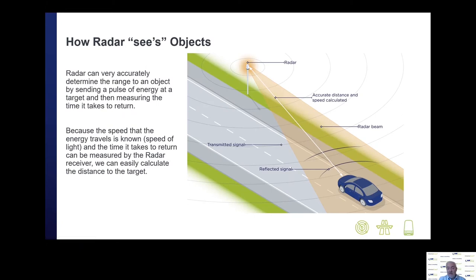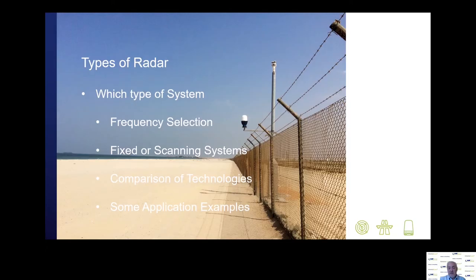How radar works: radar can very accurately measure the range to an object by sending a pulse of energy at a target and then measuring the time it takes to return. Because we know the speed that the energy travels — basically the speed of light — and the time it takes to get a return echo from the target, radar can then very accurately measure the distance and also the bearing of the target away from the sensor.